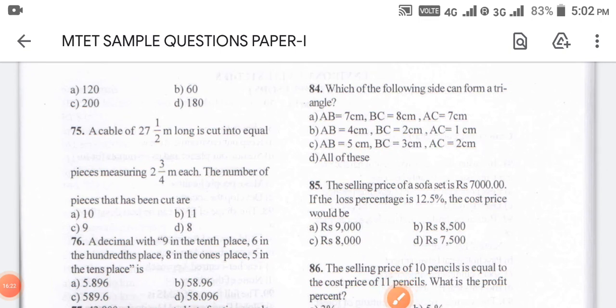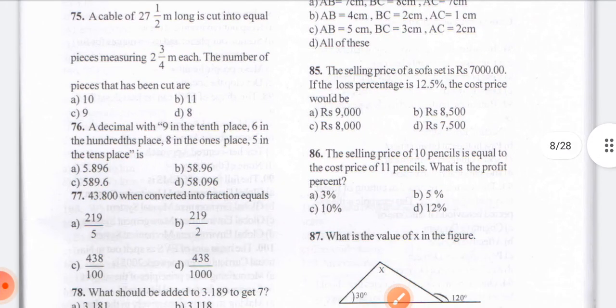Question number 85: the selling price of a sofa set is rupees 7,000. If it is sold at a loss of 12.5%, find the cost price. We have to find the cost price for loss. When we do the calculation using the formula, the cost price would be option C — 8,000.